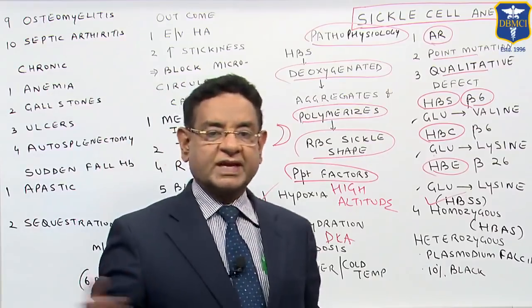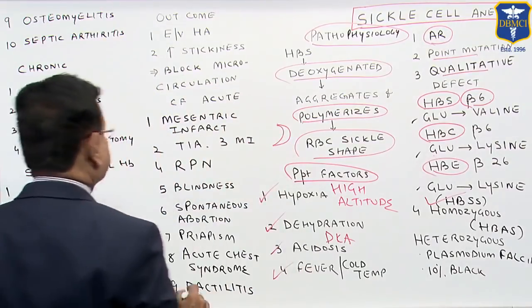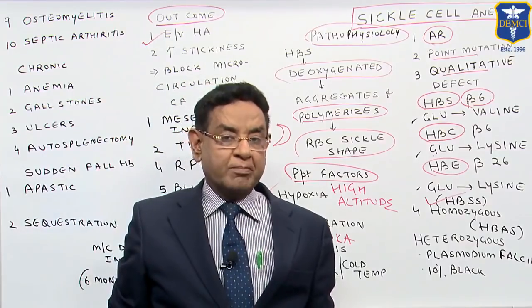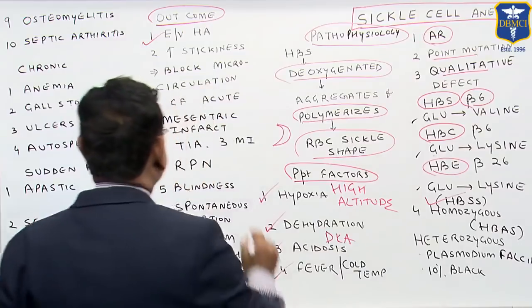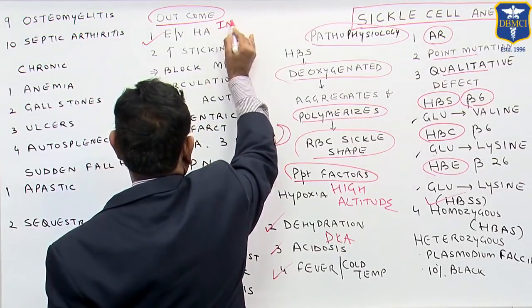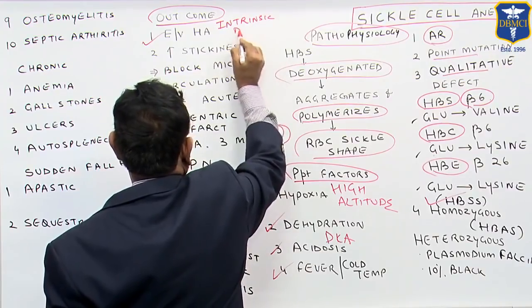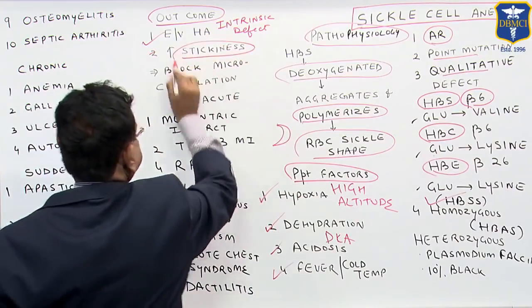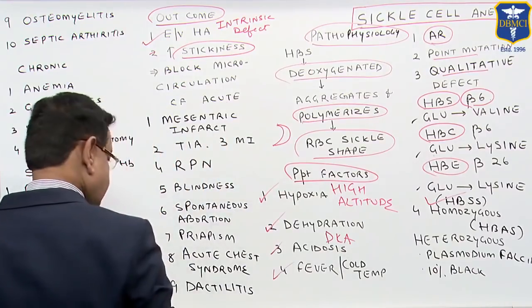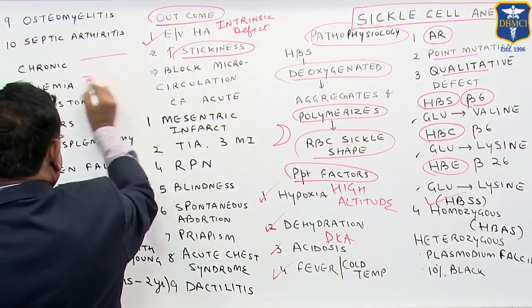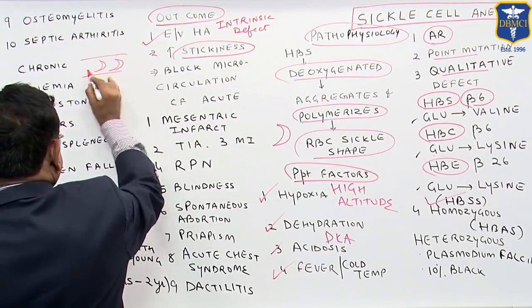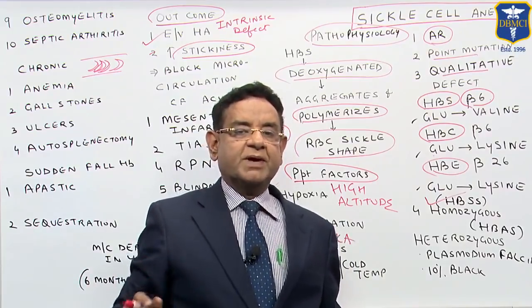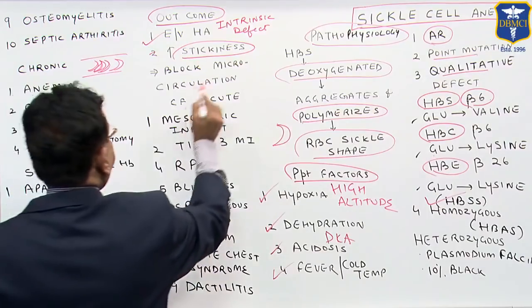What is the outcome of this sickling? Since the RBCs are shape-distorted, there is extravascular hemolytic anemia — and importantly, it is an intrinsic defect. Second, there is increased stickiness: the sickle cells tend to adhere to each other, and as they become more sticky they block the microcirculation.